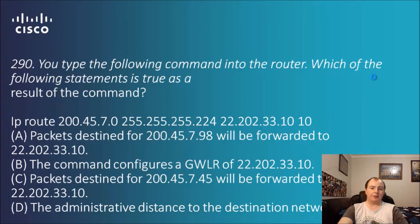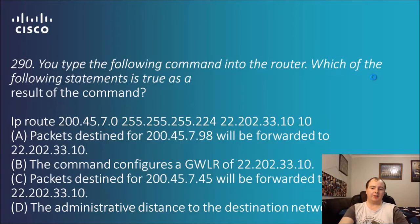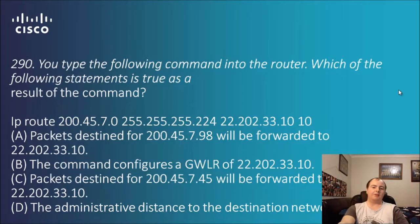Question 290: you type the following command into the router — IP route, 245.7.0, subnet mask, 22.202.3.3.10, then another 10 separately. Which statement is true? The options cover packet forwarding, configuring a gateway of last resort, and administrative distance. With the subnetting on that network, some answers don't work. The nice number at the end of the IP route command is a big clue — that number is the administrative distance. So the answer is D.